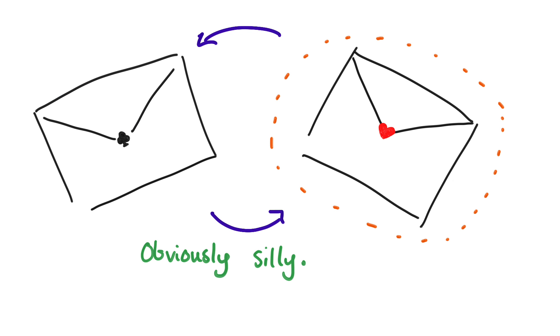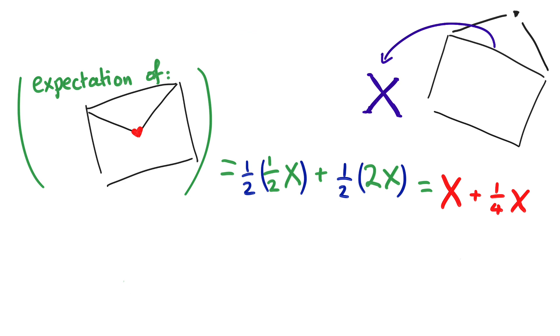Obviously, this is wrong. Both envelopes are equally likely to contain the higher amount. The point of this puzzle isn't for you to prove that to me. What I want you to do is explain why this reasoning went wrong.